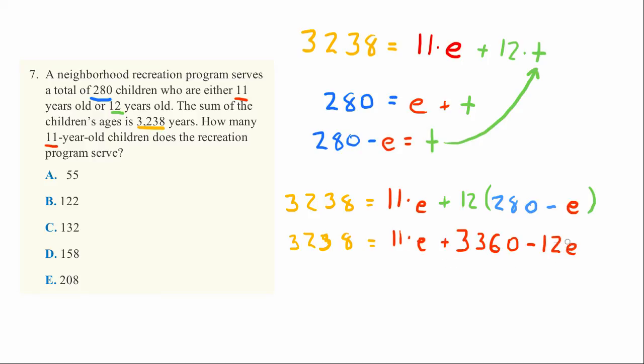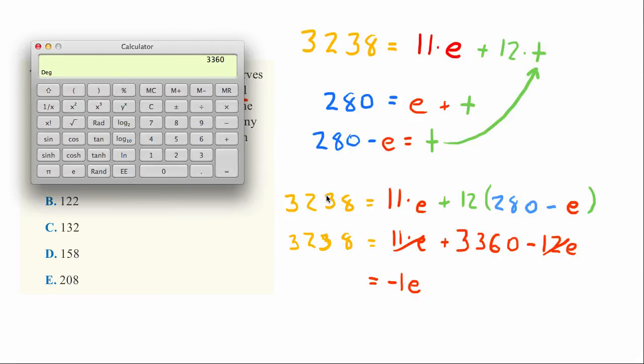Let's simplify further. 11E minus 12E equals negative E, and 3,238 minus 3,360... let's use the calculator again.